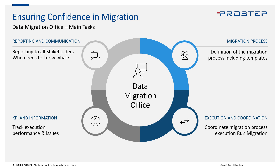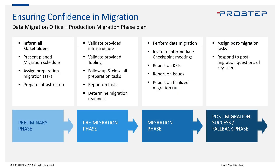Here's a quick example of how a productive migration plan could look at a high level. You can see four phases: preliminary, pre-migration, migration, and post-migration. It starts with informing all stakeholders that a migration is upcoming, assigning tasks, following up on tasks, and preparing infrastructure. Next actions include validating infrastructure, validating tooling, and reporting on task statuses. In the migration phase, you perform the actual data migration, report on KPIs and issues, and report on the final migration run. After migration, you assign post-migration tasks. The data migration office also works with many more templates — stakeholder lists, role definitions, and similar items.